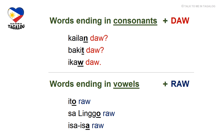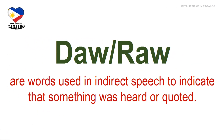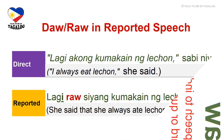I hope the difference between daw and raw is now clear to you. In English, if we want to repeat what someone else has said, we usually use a special formulation called indirect or reported speech. In Tagalog, reported statements or questions are marked by the words daw and raw.